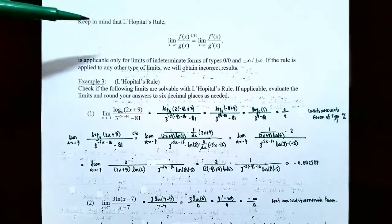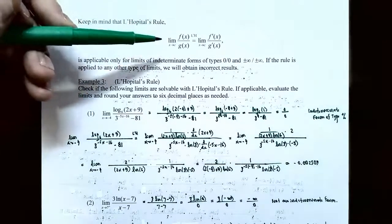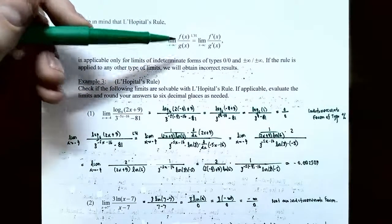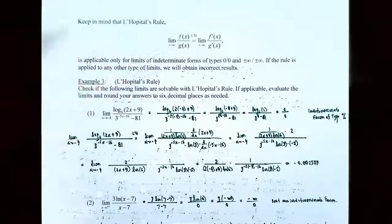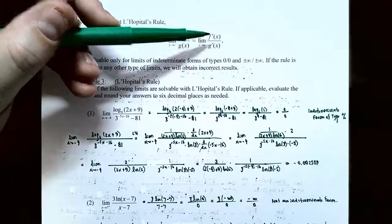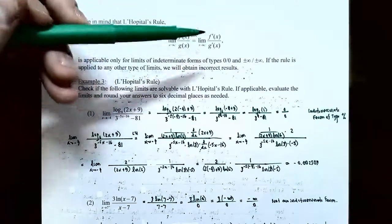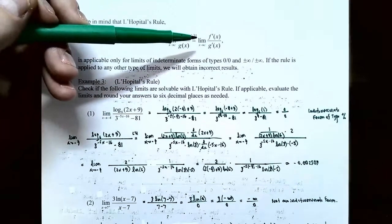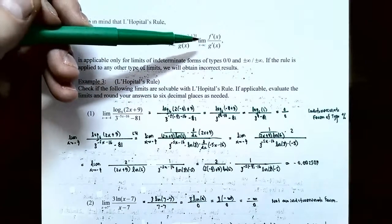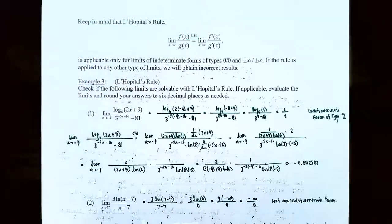We have to keep in mind that we can only use L'Hôpital's Rule, which says that the limit as x approaches c of f(x) divided by g(x) that results in an indeterminate form of type 0/0 or ∞/∞ allows us to take the derivative of the numerator, f′(x), and the derivative of the denominator, g′(x), and then find the limit of this ratio of the two derivatives: the limit as x approaches c of f′(x) divided by g′(x).